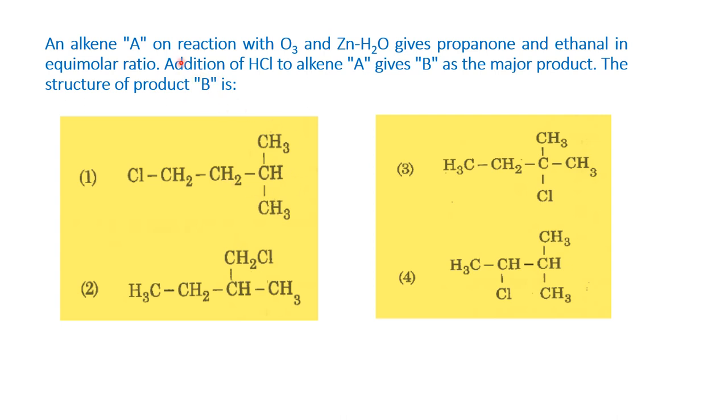In this particular question, the structure of A is not given and they are asking the structure of B. They are also giving a statement that A is converted to two products and the names of the products are given here. Let us first see what is ozonolysis and then how these products are formed.